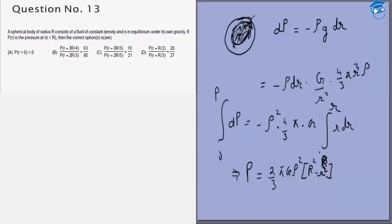Put r equals 3R by 4 and 2R by 3 and you can take the ratio. Similarly you can put in the other two options and take the ratio. And you will find that the correct options in this case are b and c.